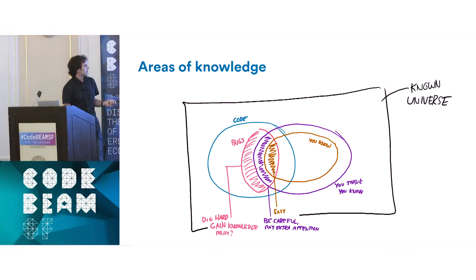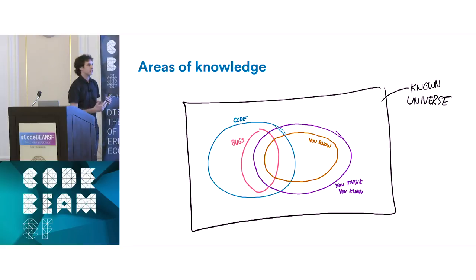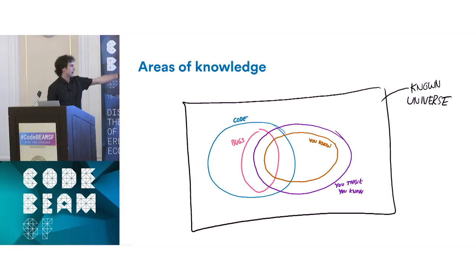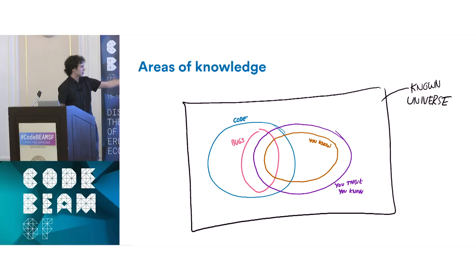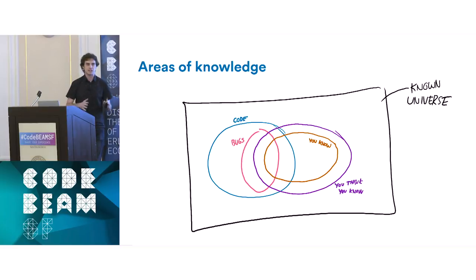Another way to increase knowledge is to look at the circles of what people know. If the only people you hire are friends from the same school who worked the same jobs, you're going to have the same kind of overlap everywhere — interchangeable perspectives. If you get someone with an entirely different technical background, or even a non-technical one, you get a much broader overlap of all the circles in your areas of knowledge.